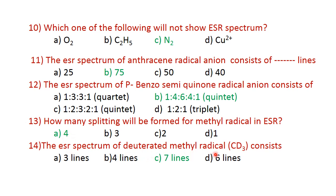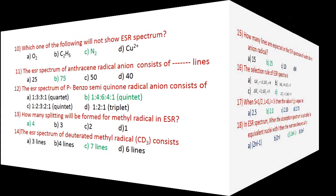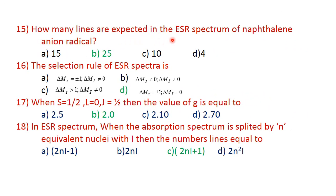ESR spectrum of deuterated methyl radical CD₃: the neighboring nuclei is 3, with I equal to 1 (for deuterium). Using formula 2NI+1: 2×3×1 + 1 = 7 lines. CD₃ gives 7 lines. Question 14: how many lines are expected in the ESR spectrum of the naphthalene anion radical?